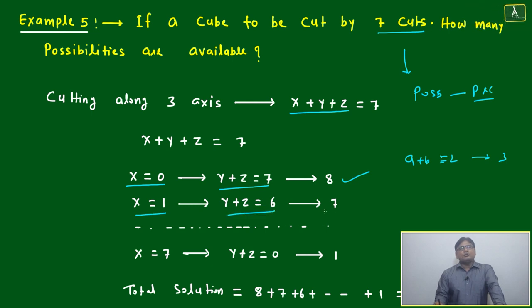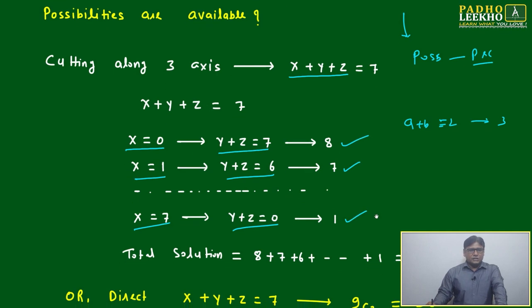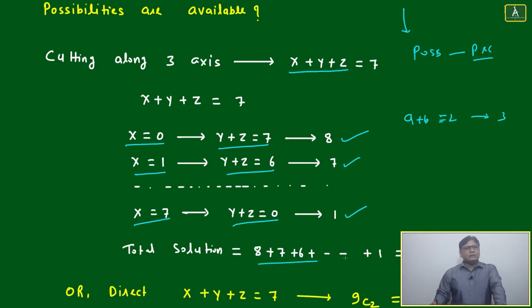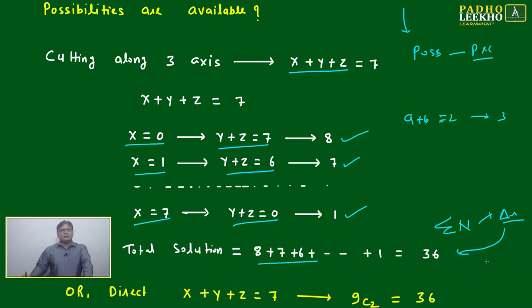Similarly, if you keep going, x equals 7 means y plus z equals 0, giving only 1 solution. If you add all these, it gives the summation of natural numbers, or triangular numbers. We are well versed with this pattern, so it becomes 36.